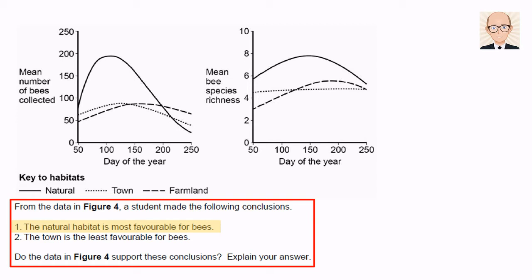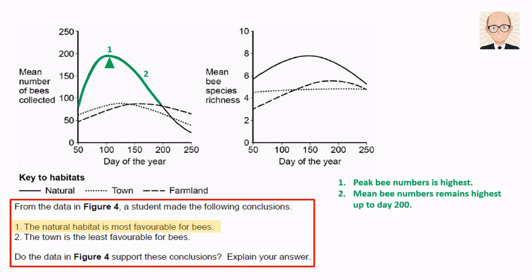There are at least three pieces of evidence that support this conclusion. The maximum number of bees is found in the natural habitat. The mean number of bees remains the highest in the natural habitat for most of the 250-day study period. And the mean bee species richness is highest in the natural habitat throughout the entire study period.